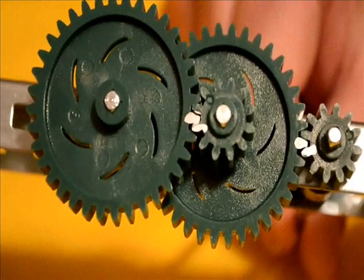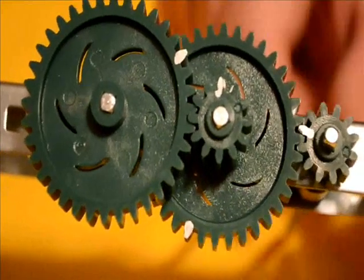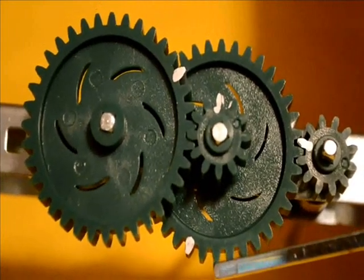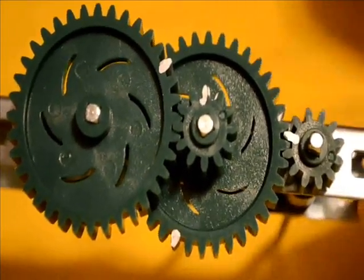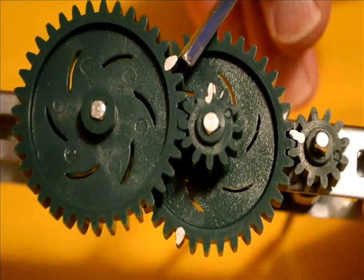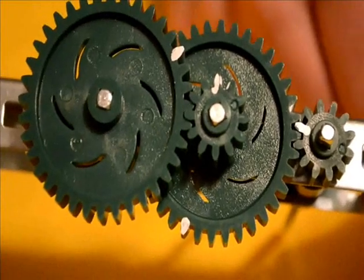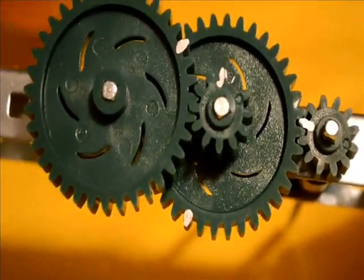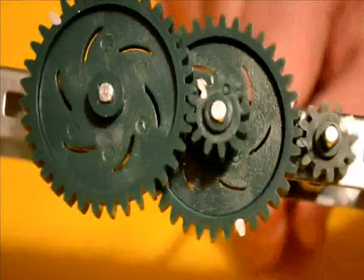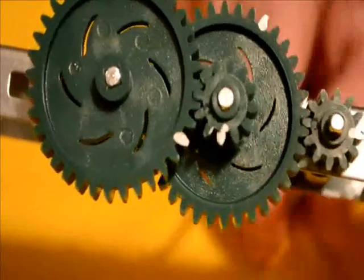As we turn the 12 tooth gear one complete revolution, notice our driven 36 tooth gear has traveled one-third the way around, but our output gear has only traveled one-ninth the distance around. This gives us a gear ratio of 9 to 1, because the driving gear needs to go around nine times before the driven gear goes around once.